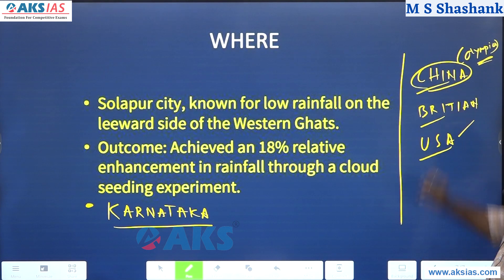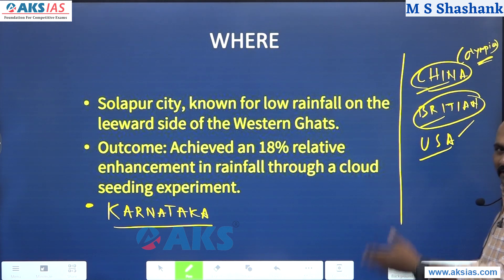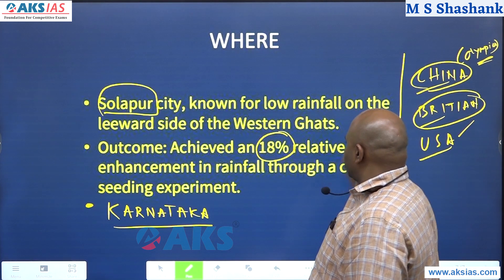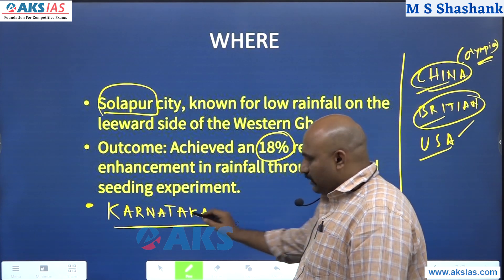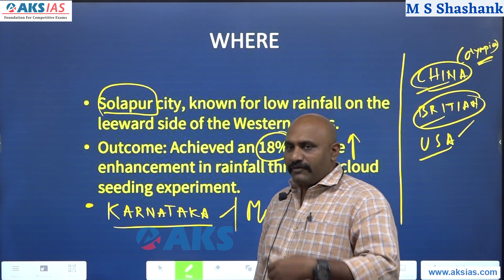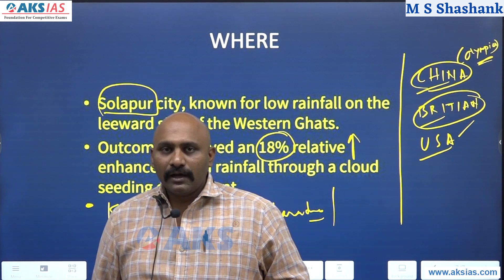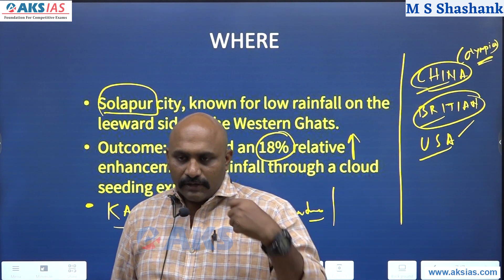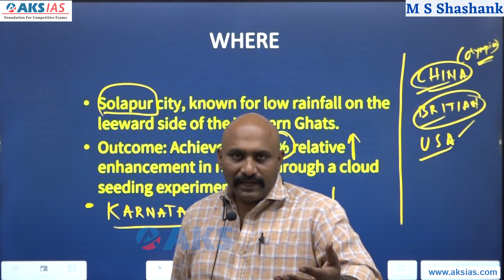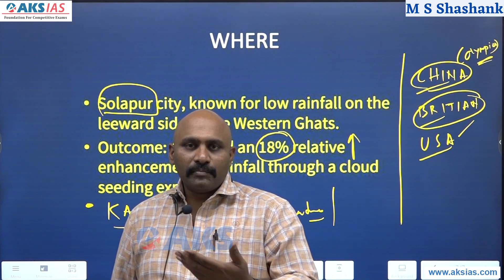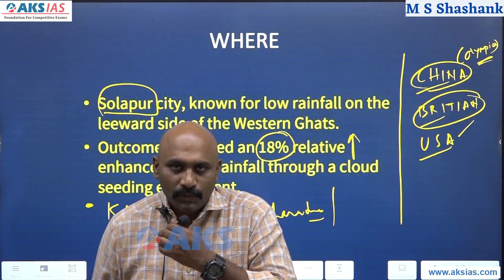This has been used in the USA, China during the Beijing Olympics, and in Britain during one of the royal marriages. In India, Solapur city saw an 18% increase in relative rainfall. It is also being done in Karnataka and Maharashtra. If the program is successful, it will lead to a droughtless India. The plan is to start with Delhi first, and hopefully this beautiful process will make India a drought-free society.